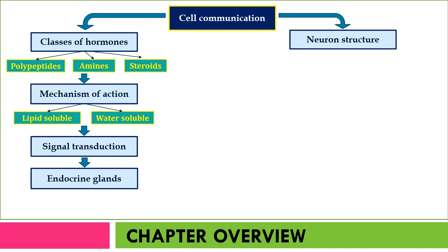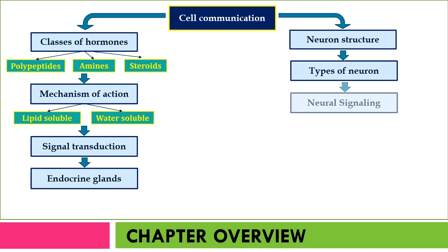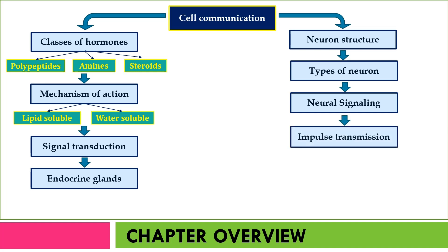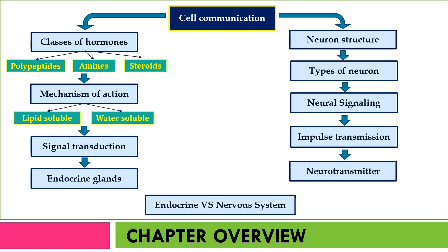You will also learn about the structure of a neuron, the types of neuron, the process in neural signaling, how neurons transmit impulse, neurotransmitters, and the last one, a comparison between the endocrine and the nervous system.